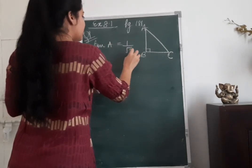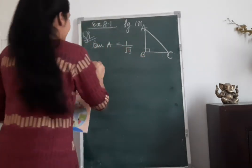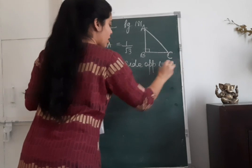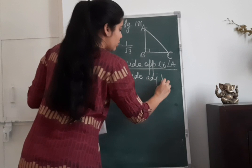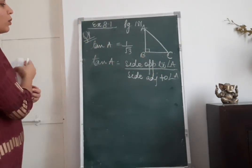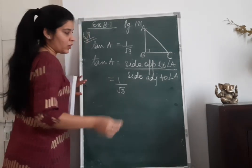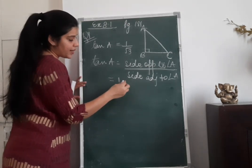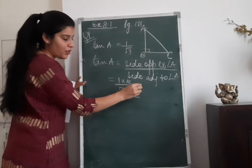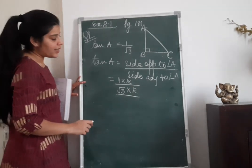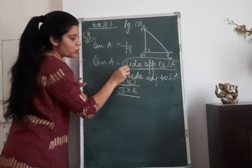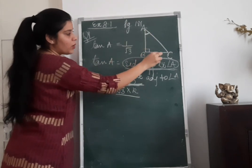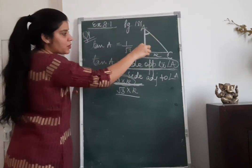Tan A is equal to 1 upon root 3. And tan A is equal to side opposite to angle A upon side adjacent to angle A. This is 1 upon root 3. Now let us suppose there is some number K which is cancelled from both numerator and denominator. Using the same analogy from our previous question, side opposite to angle A is K and side adjacent to angle A is root 3K.